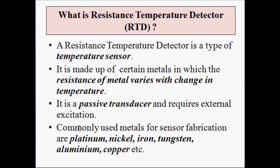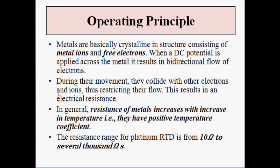Which metals are used for sensor fabrication? The commonly used metals are platinum, nickel, iron, tungsten, aluminium, and copper. Out of these metals, platinum is the preferred metal for RTD and is the most commonly used metal — the main choice for fabrication of RTD. The main operating principle is that RTDs respond to the change in surrounding temperature with a change in the resistance of the metals.